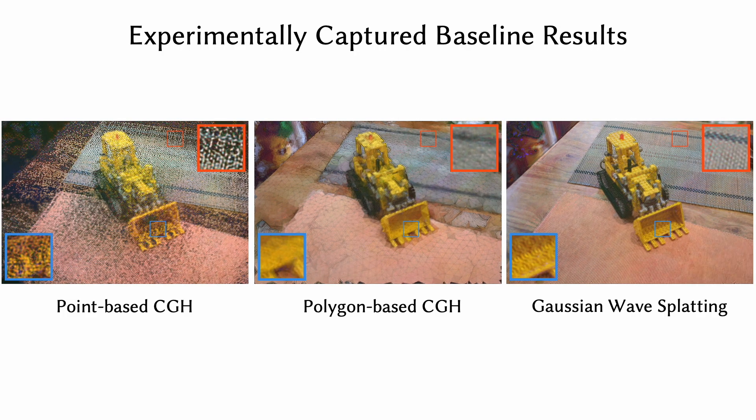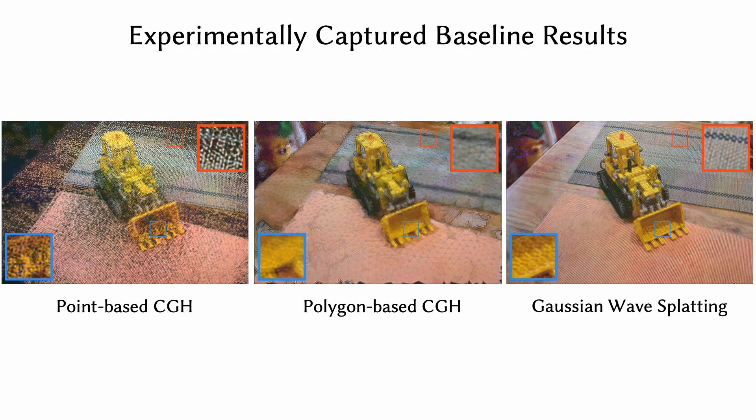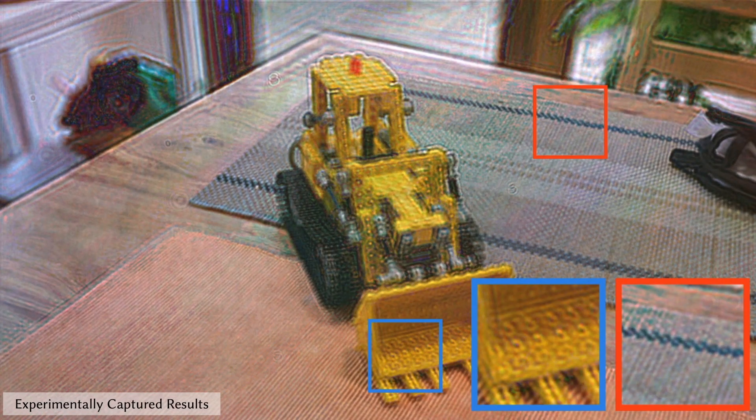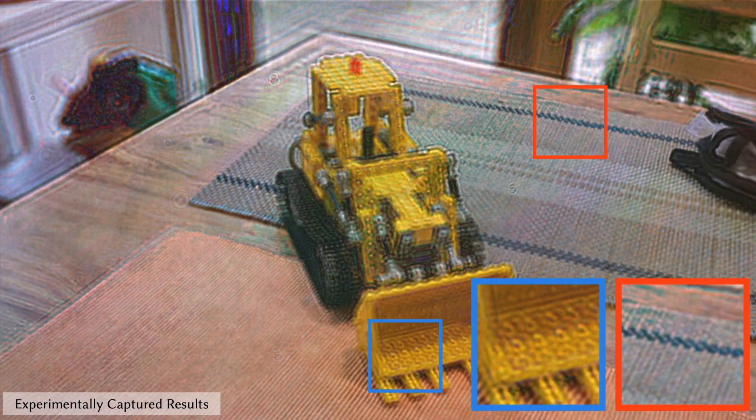Gaussian wave splatting greatly outperforms prior point-based and polygon-based CGH algorithms, reconstructing sharp details in focused regions. It also achieves accurate 3D refocusing effects from arbitrary novel viewpoints, demonstrating the robustness of our method.